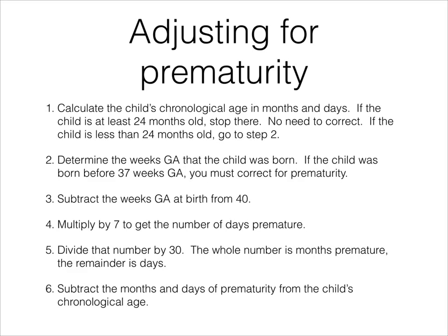The first step is to calculate the child's chronological age in months and days. You need to make sure that the baby is at least two years old or less. If they are over two years old, you are not going to correct for prematurity, so there's no need to do this adjustment.